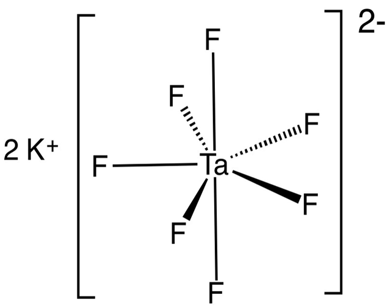Ta2O5 plus 14HF yields 2H2TaF7 plus 5H2O. This solution is subjected to a number of liquid-liquid extraction steps to remove metallic impurities, most importantly niobium, before being treated with potassium fluoride to produce K2TaF7. H2TaF7 plus 2KF yields K2TaF7 plus 2HF.